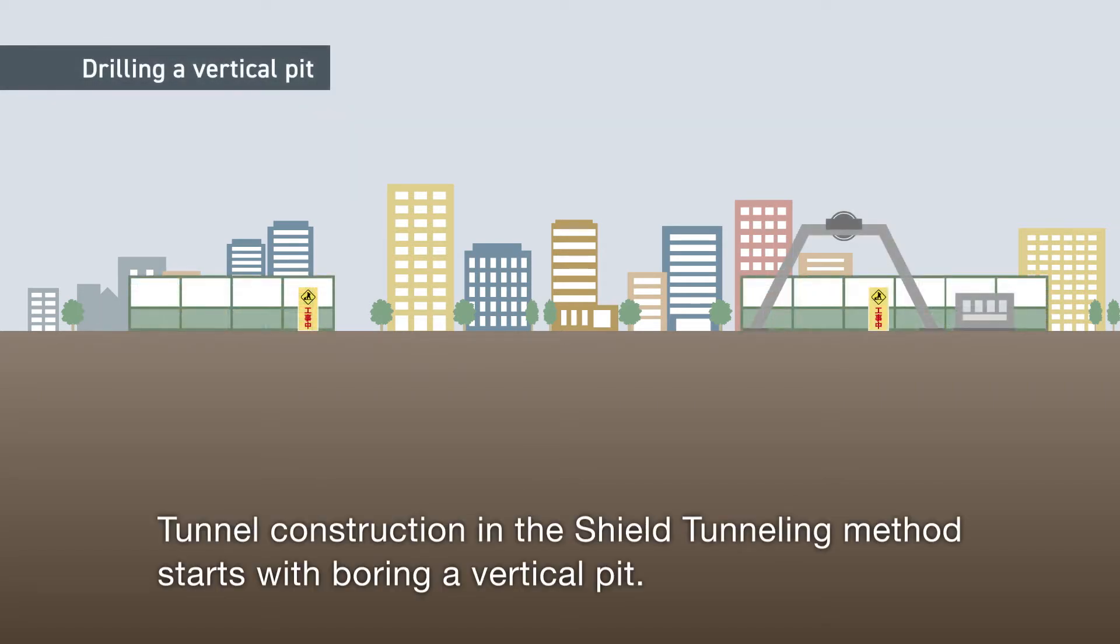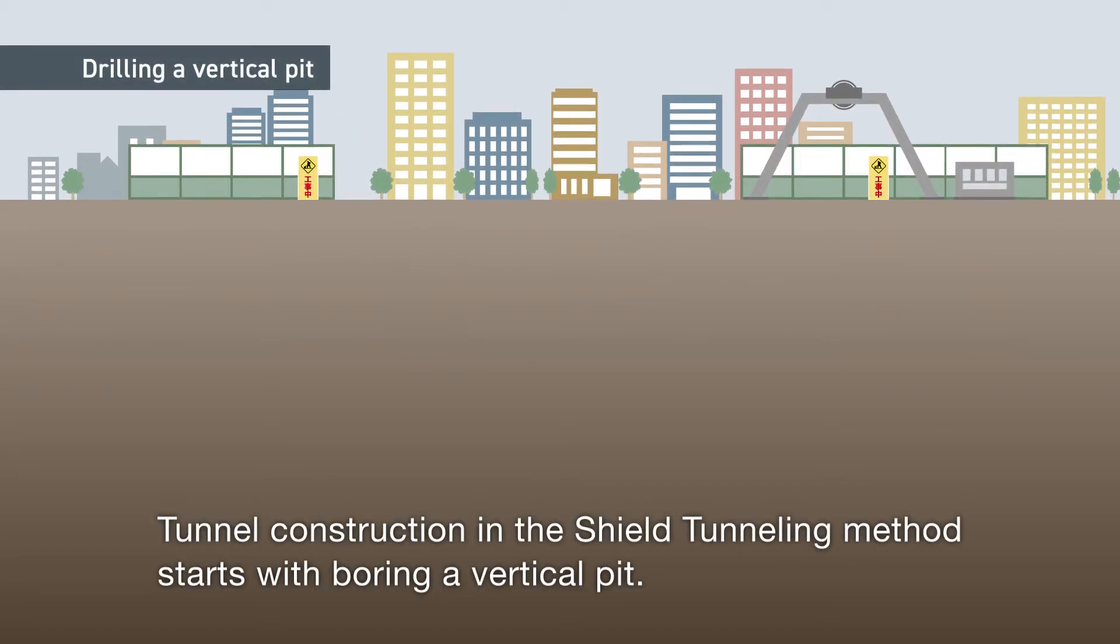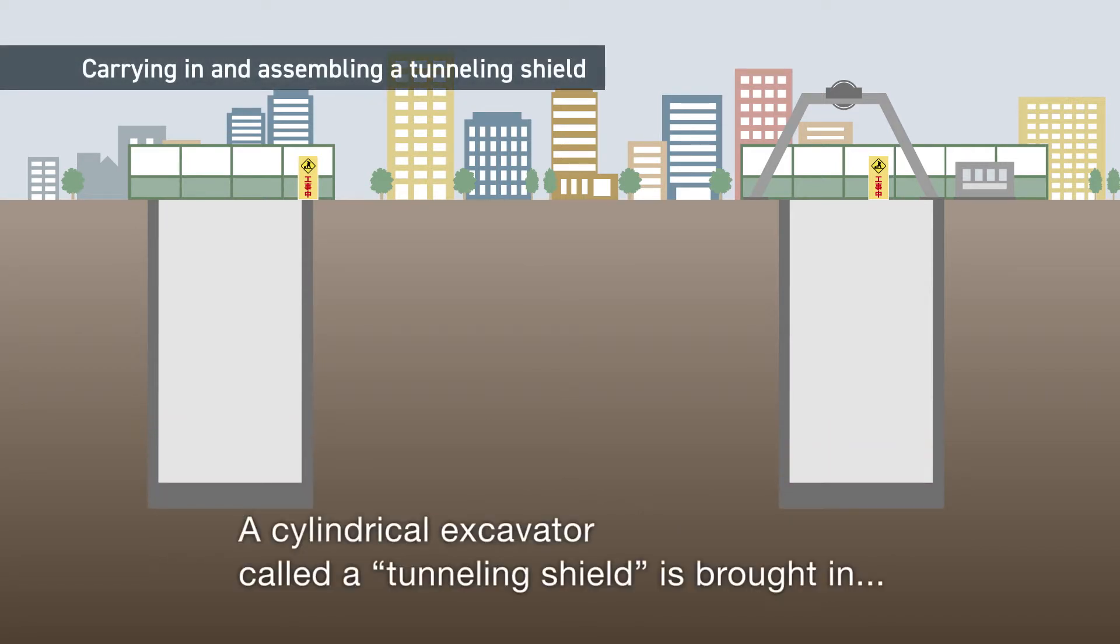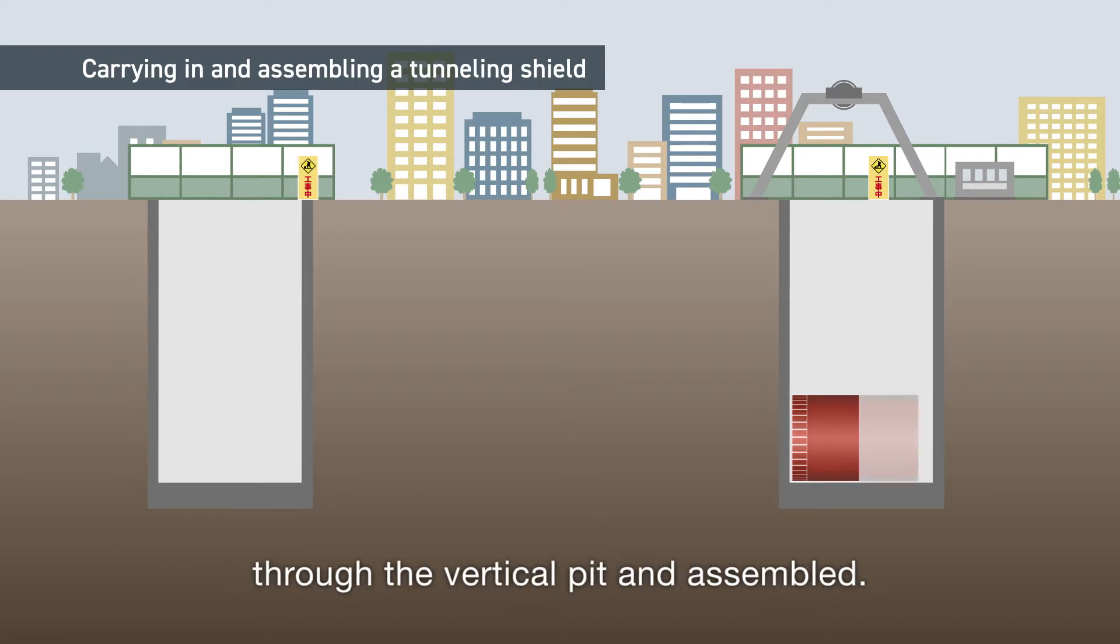Tunnel construction in the shield tunneling method starts with boring a vertical pit. A cylindrical excavator called a tunneling shield is brought in through the vertical pit and assembled.